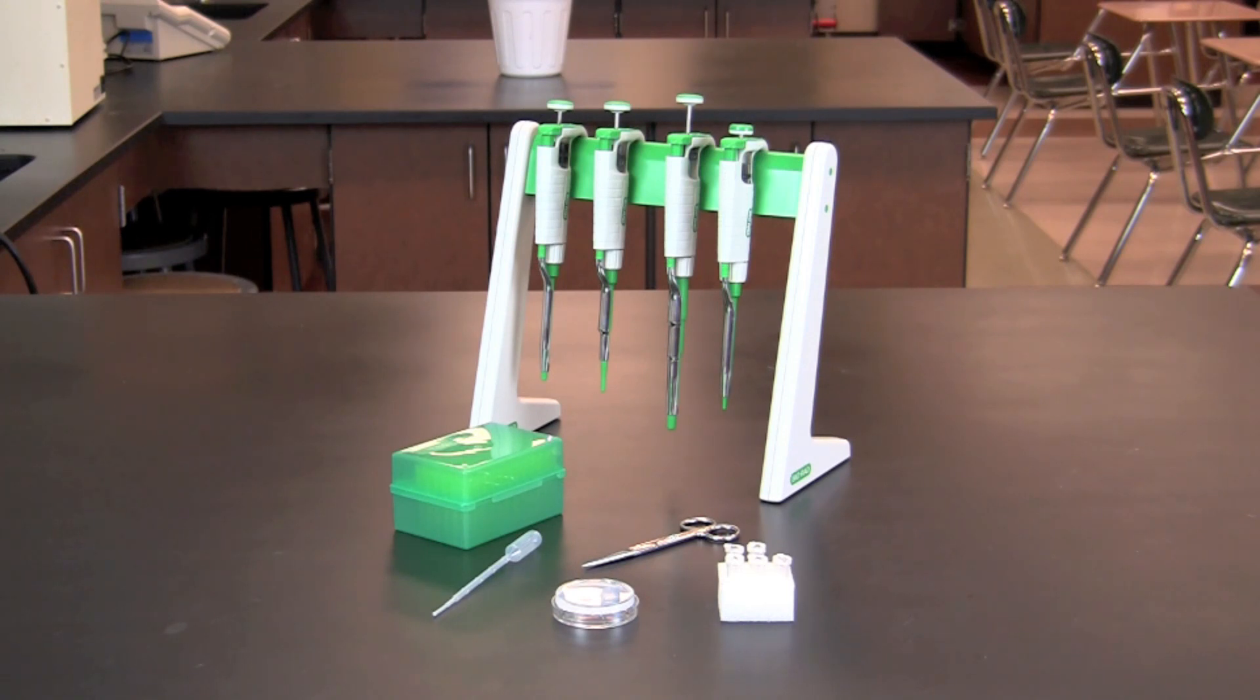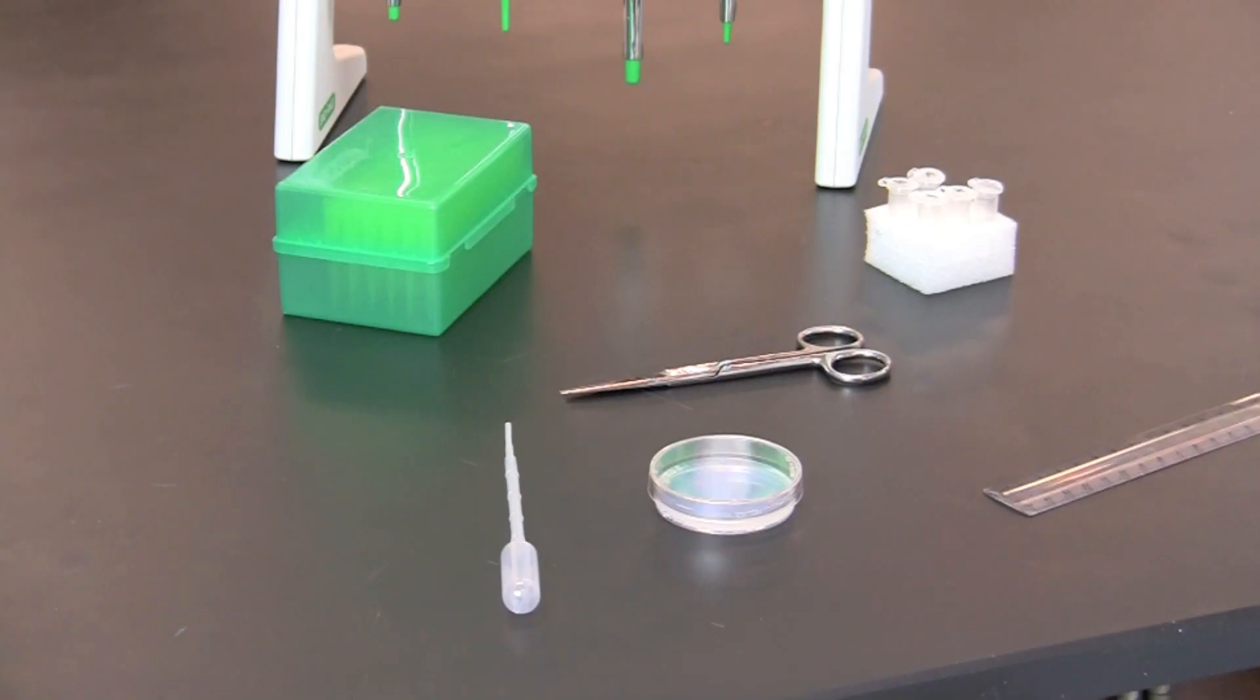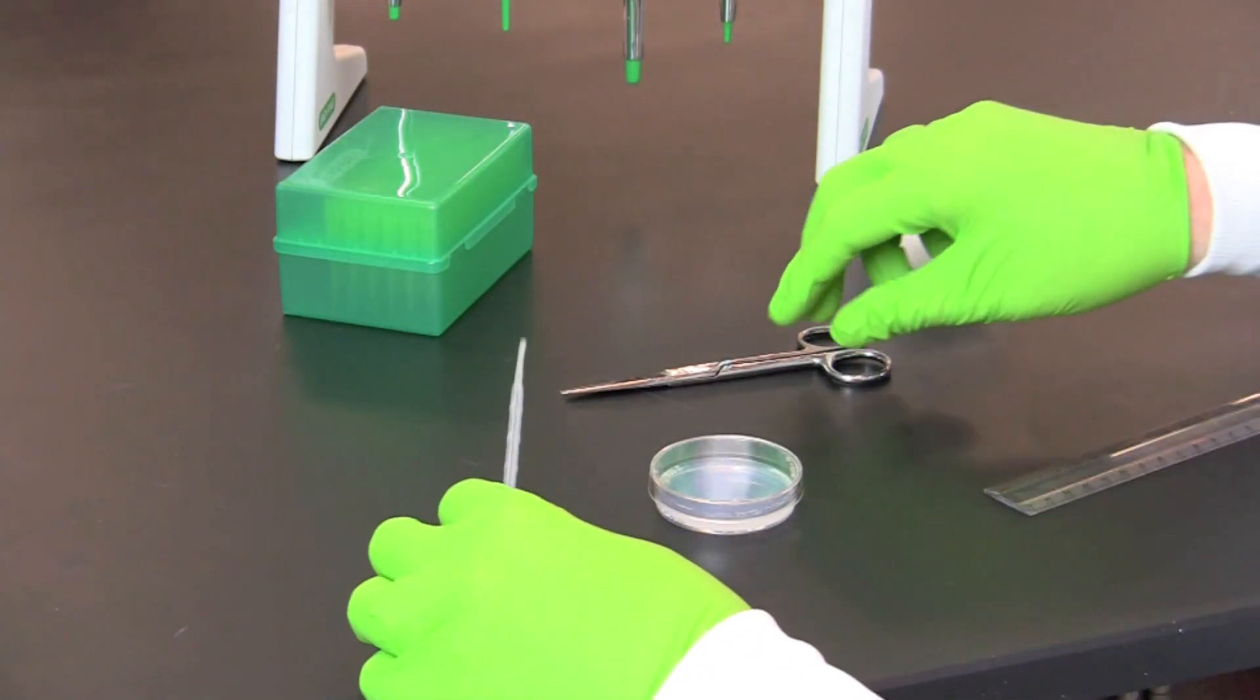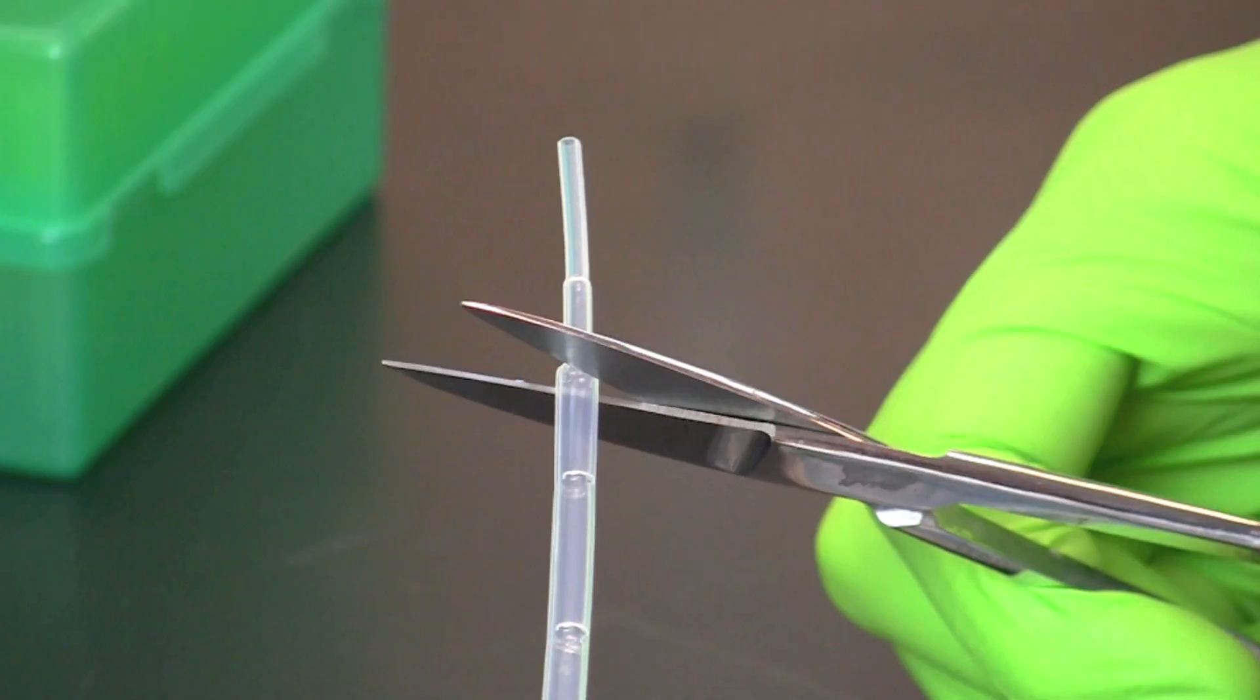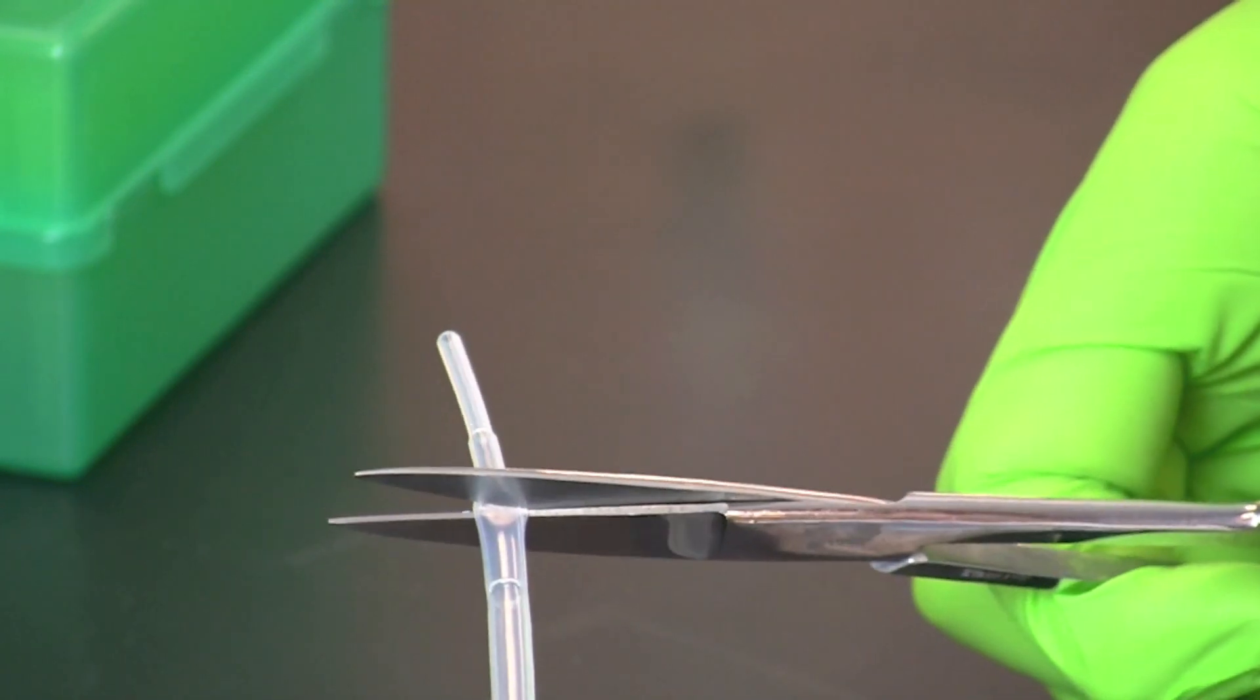In this video you will learn how to perform an Ouchterlony assay. Using scissors or razor blade, cut off the end of a 1 milliliter transfer pipette between the 250 microliter and the 100 microliter marks.